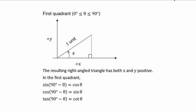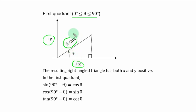In the first quadrant the acute angle is between zero degrees and 90 degrees. Here both axes are positive and the hypotenuse is of unit 1. So in the first quadrant: sine of (90 degrees minus theta) is equal to cos theta, cos of (90 degrees minus theta) is equal to sin theta, and tan of (90 degrees minus theta)